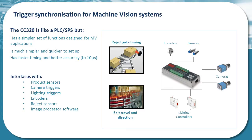When compared to a PLC, the benefits of the CC320 include deterministic speed, dedicated machine vision functionality, ease of use and low cost.